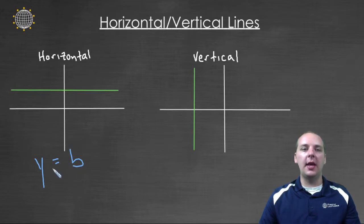it'll be y equals some constant. And what's unusual about that is that it doesn't have an x value. So if you have a linear equation that doesn't have an x, then it'll be a horizontal line.